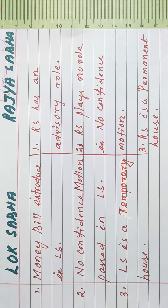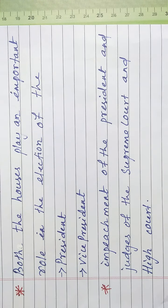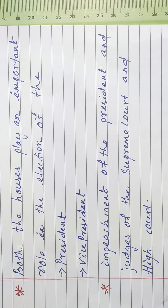Lok Sabha is a temporary house, but Rajya Sabha is a permanent house — it cannot be dissolved in any circumstances. However, there are some similar powers also. Both Houses play an important role in the election of the President and Vice President. Both Houses play an important role in the impeachment of the President and Judges of the Supreme Court and High Court. Thank you very much.